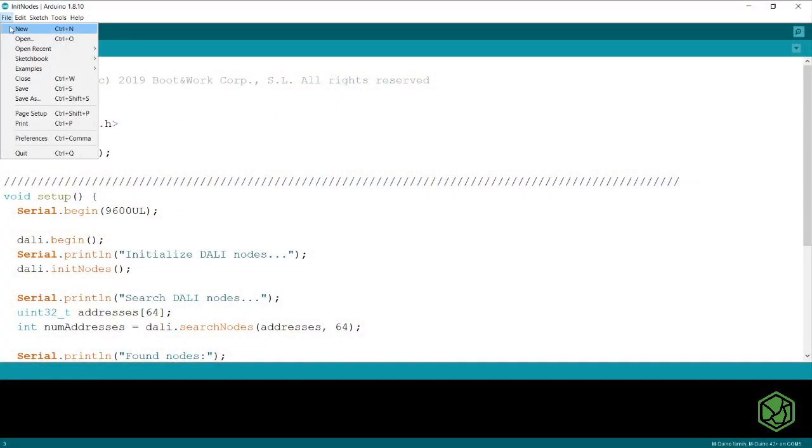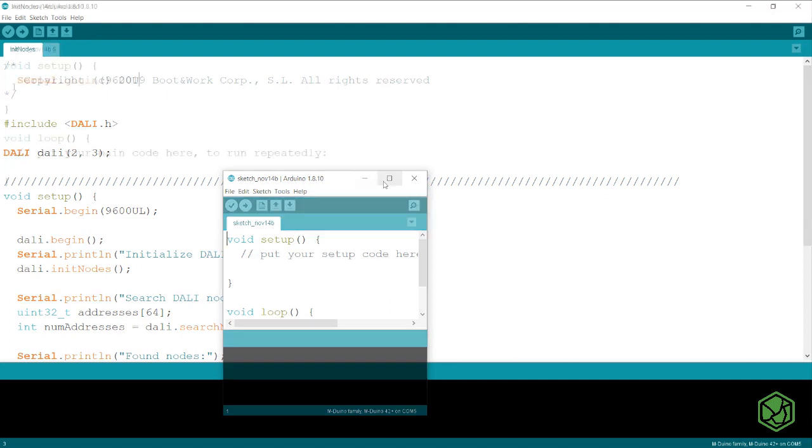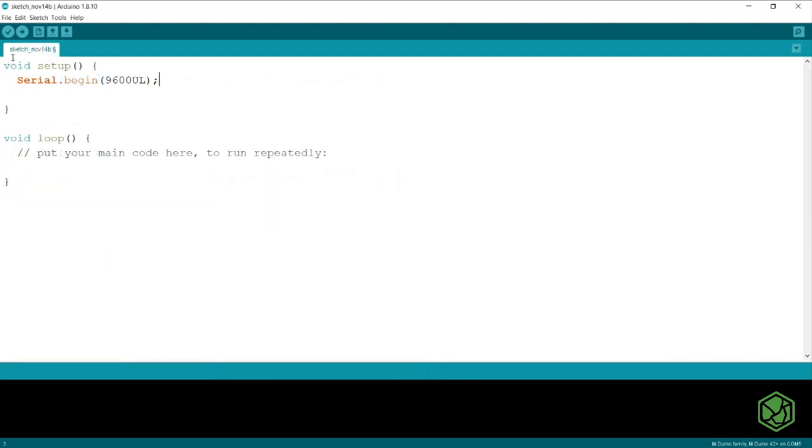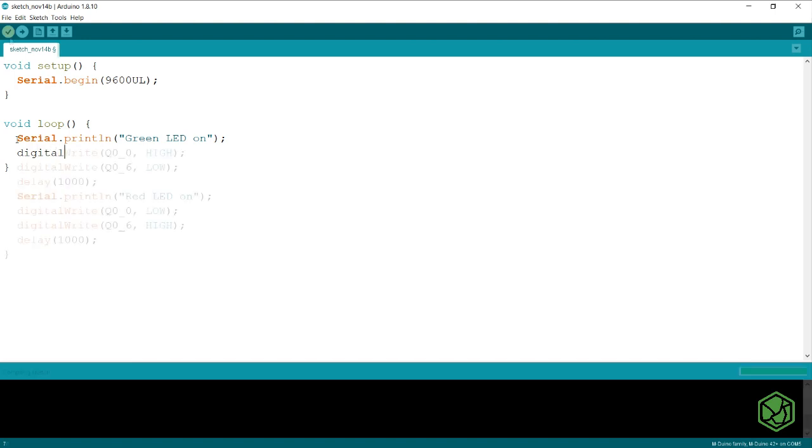Once in the Arduino IDE, we will open a new sketch. In the setup, we will configure the serial to debug the program. When programming, just use the digital light with the desired state.